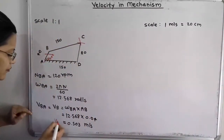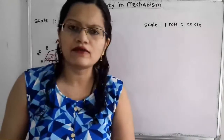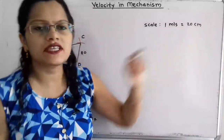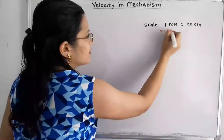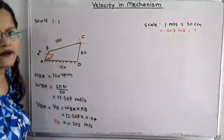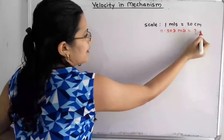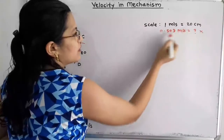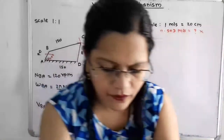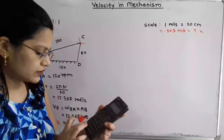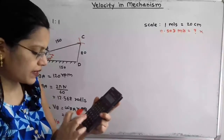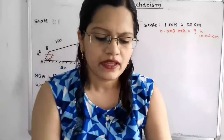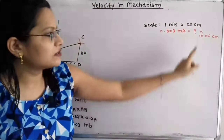This is the linear velocity VB. Now we have to draw the velocity diagram with a suitable scale. We will take scale: 1 meter per second equals 20 centimeters. Our velocity is 0.503 m/s. By cross multiplication: 0.503 × 20 / 1 = 10.06 centimeters. So we have to take a distance of 10.06 cm for the velocity vector. This is the magnitude.